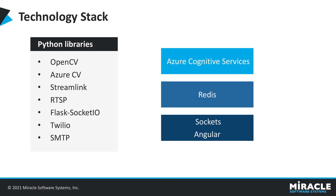Here is the technology stack we use for this use case. The Python libraries include OpenCV and Azure CV for image processing and image recognition. Streamlink and RTSP are the libraries used to connect to the CCTV and any video feed. Flask and Socket.IO are used to connect the backend with our frontend dashboard. Twilio and SMTP are used for sending SMS and email alerts. We use Azure Cognitive Services for model building, and Socket and Angular are the frontend components used for dashboard building.